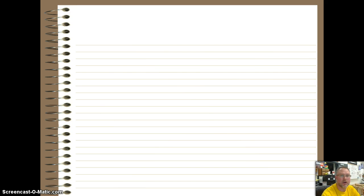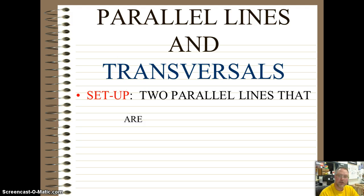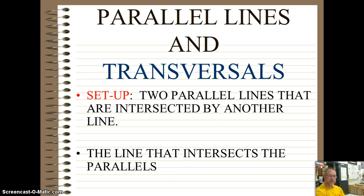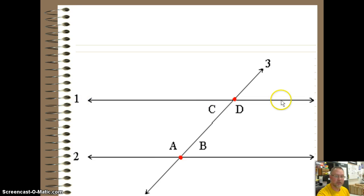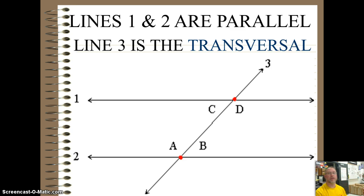The one we're going to focus on is parallels with transversals. One of the biggest things is you have to state that everything is parallel and that you have a transversal. You have two parallel lines — lines that don't meet — intersected by another line, which is referred to as the transversal. That intersects or cuts across, or bisects, the parallel lines. So line one is parallel to line two, and line three is our transversal that goes through it.